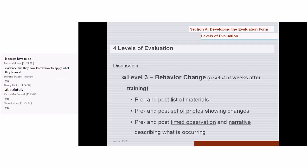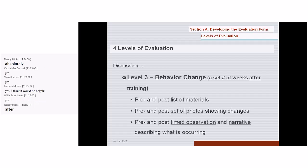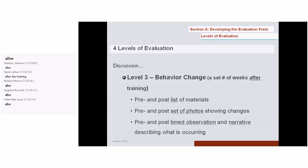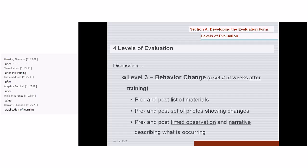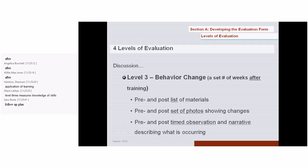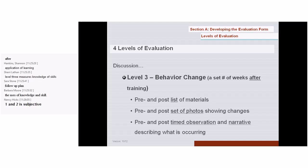Does level three happen during the training or after? After. What distinguishes level three from levels one and two? One and two are done during training; level three is the actual doing afterward. Level three is always a pre and post, and it encompasses practice and implementation effort. Level one and two do not require pre or post, and they do not require practice and implementation.